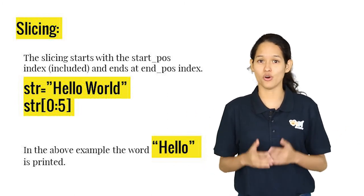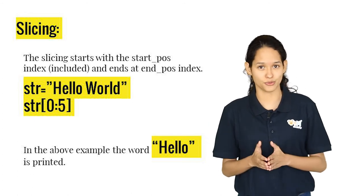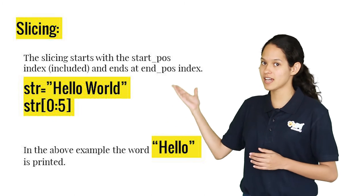The ending index value always has to be one value greater than the actual index value. For the above example, the beginning is zero and the end is five.